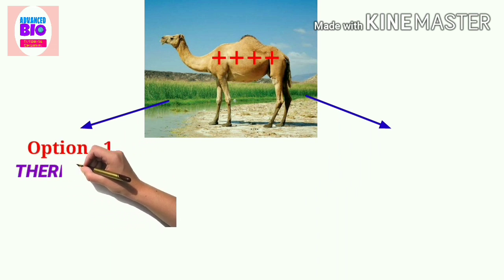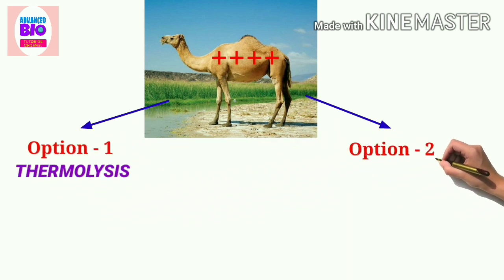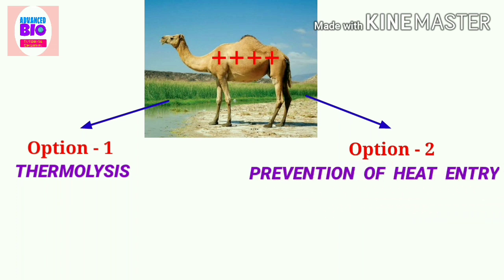Option number one: thermolysis. And option number two: prevention of heat entry. Now let's see how the camel manages this situation or solves these problems. Mind that camels are well adapted to manage these problems. Adaptation occurs anatomically, morphologically, and physiologically. I am discussing those adaptations one by one. Number one is the large body size. Large body mass heats up much more slowly.